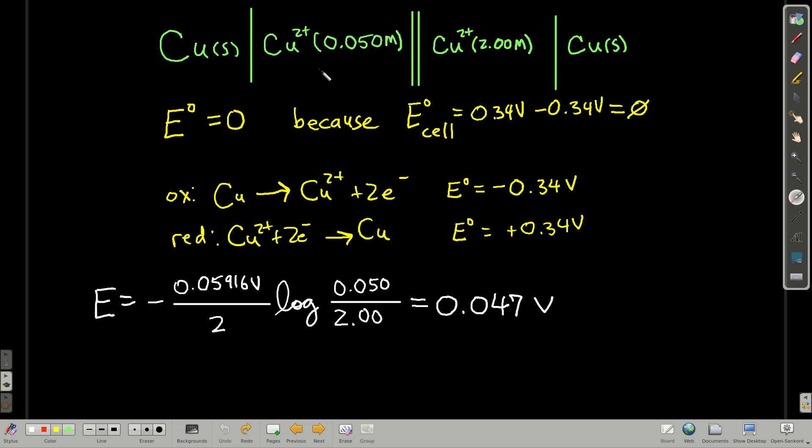in which the anode and the cathode have the same species. So we have here, this is line notation, so this tells you that the anode's on the left, and the cathode is on the right. The double line represents the salt bridge or the porous plug.